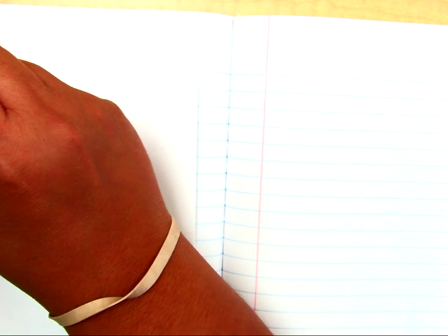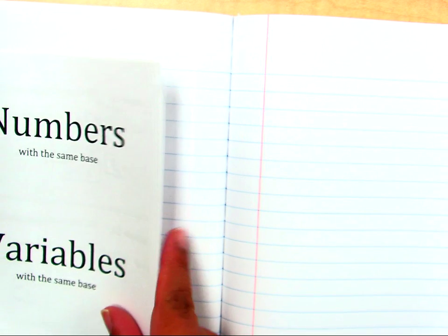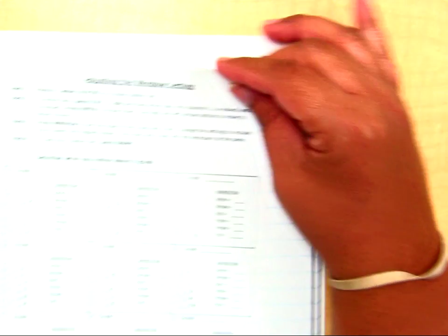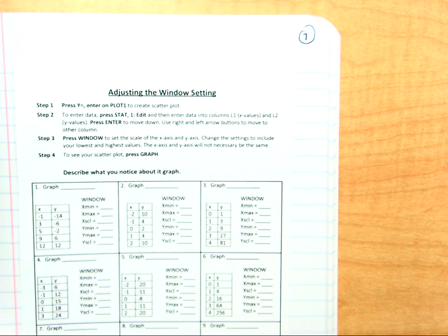On page six, what you're going to do is glue four dots. You're going to put Adjusting the Window Setting.